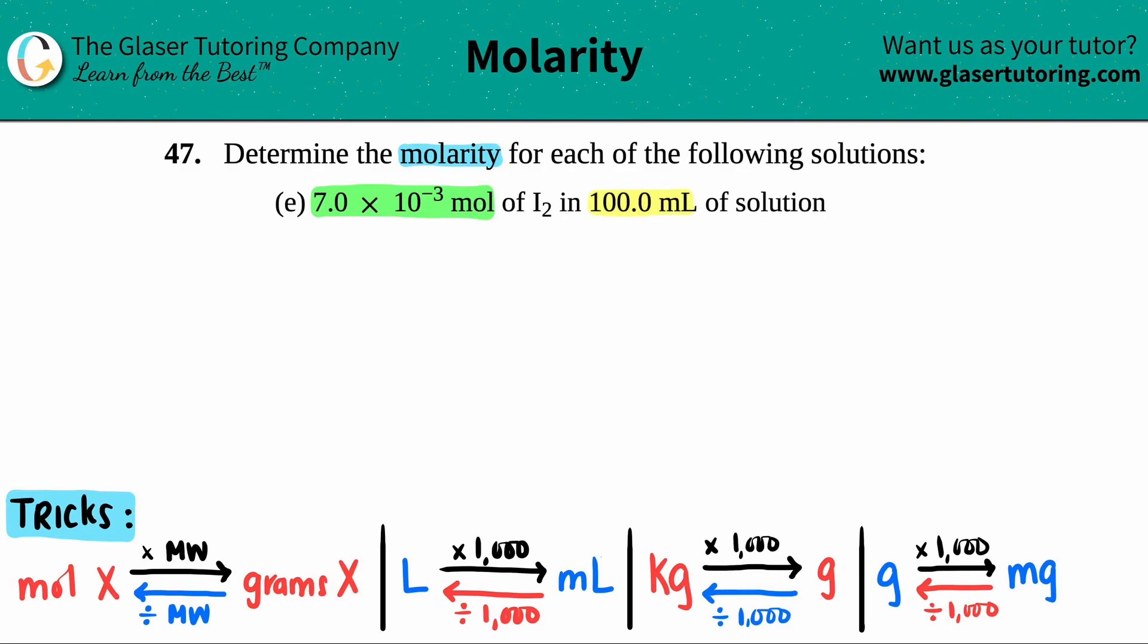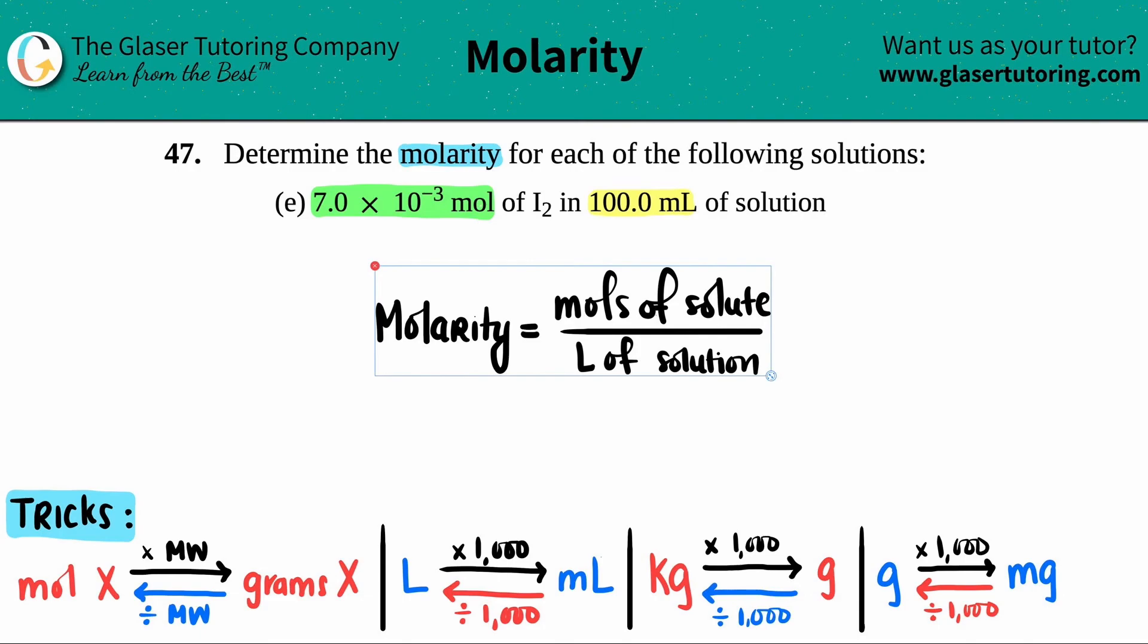All right, so we need to solve for molarity. Molarity comes from a formula, right? And they gave us a quantity of the substance, 7 times 10 to the negative 3 moles, and they told us the volume, 100 mL. So the formula that's coming to mind is molarity equals the moles of the solute divided by the liters of solution.